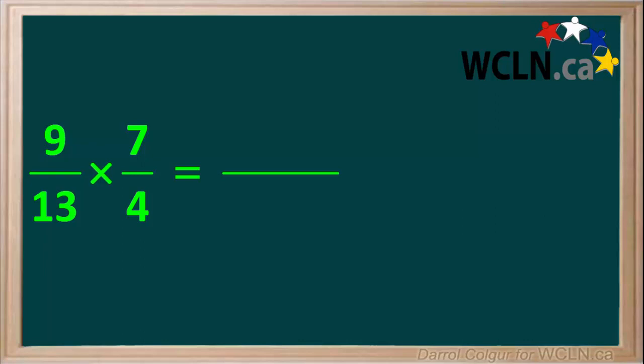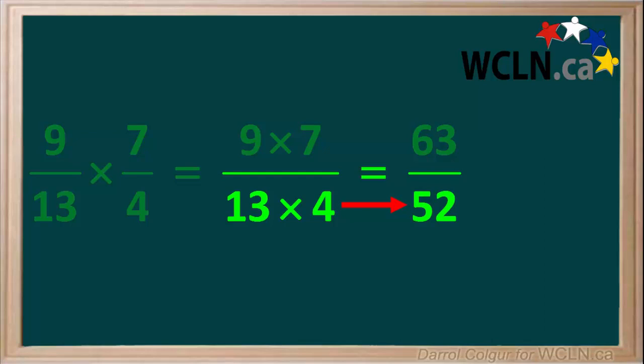We'll make this equal to a new fraction, where the numerator is 9 times 7, and the denominator is 13 times 4. 9 times 7 is 63, and 13 times 4 is equal to 52.